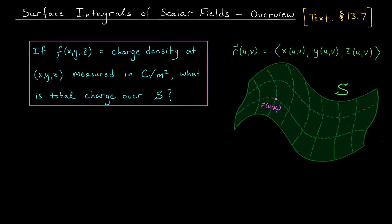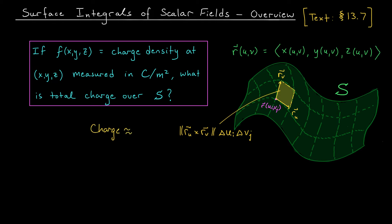To find the total charge on the patch, given the charge density, we need to multiply by the area of the patch — we need to clear that meters squared term. We don't know the area of the patch exactly, but in the last lesson we learned how to approximate it. The area of the patch is roughly the area of a parallelogram, which we can obtain using the cross product of two tangent vectors. The area is roughly the norm of r_u cross r_v, times Δu_i times Δv_j. This means the total charge on the patch is approximately f(r(u_i, v_j)) times that area approximation.